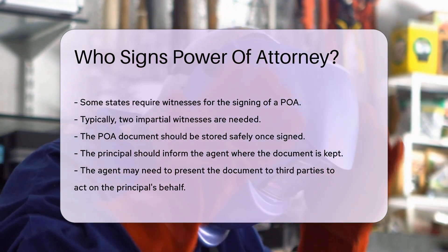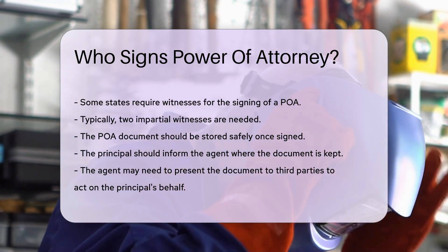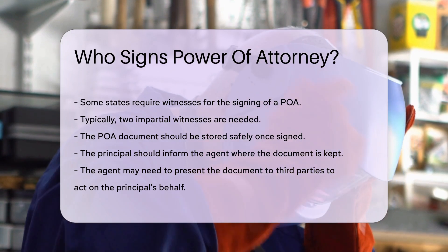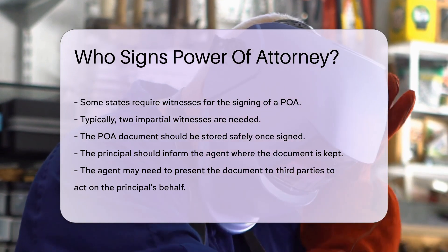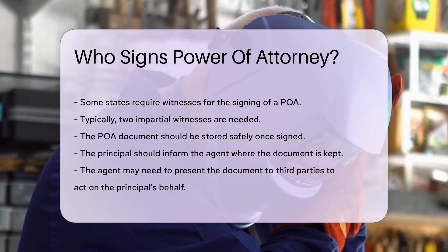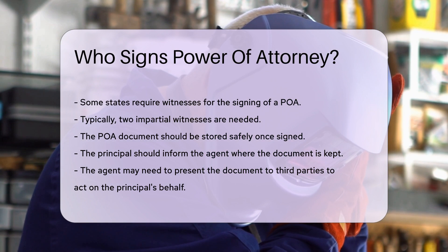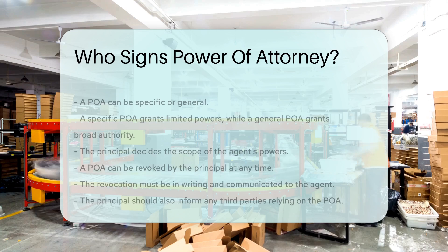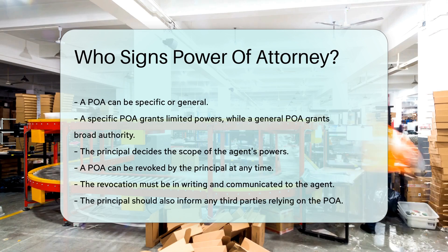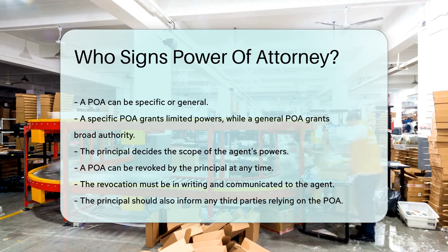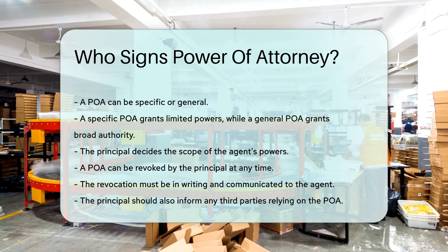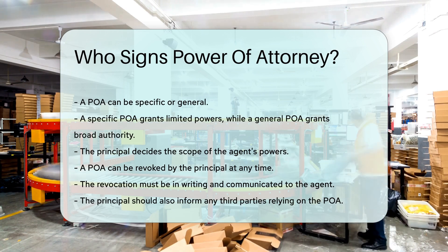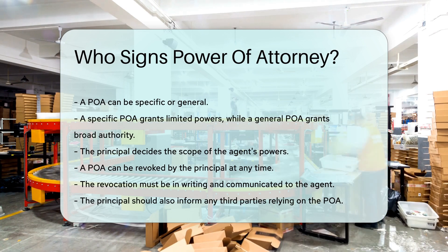Once signed, the POA document should be stored safely, and the principal should inform the agent where it is kept. The agent may need to present the document to third parties to act on the principal's behalf. A POA can be specific or general — a specific POA grants limited powers while a general POA grants broad authority. The principal decides the scope of the agent's powers.